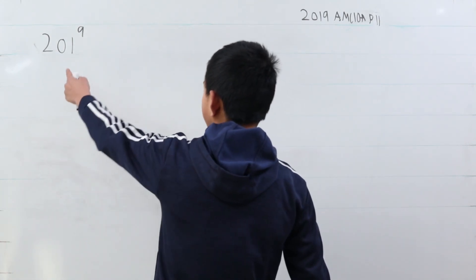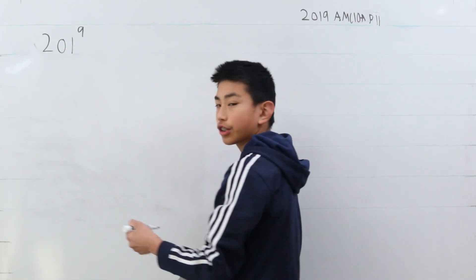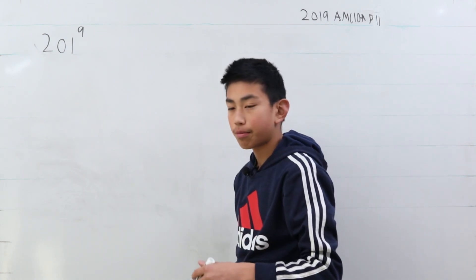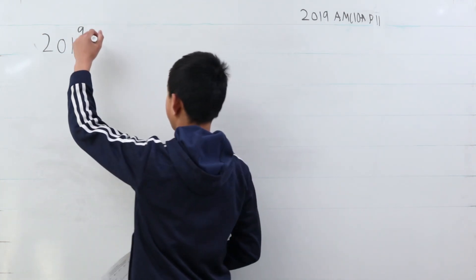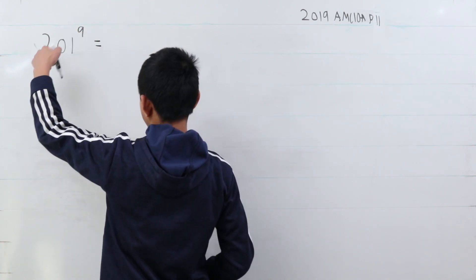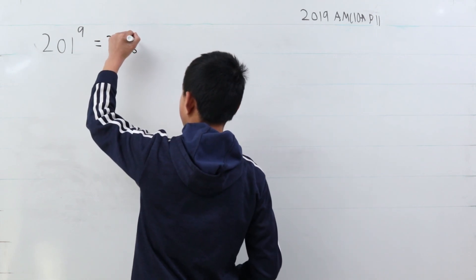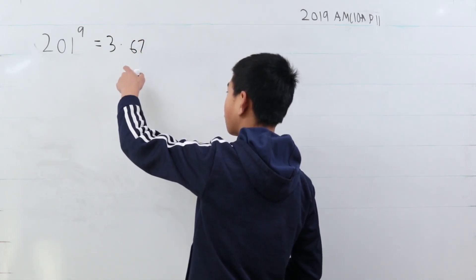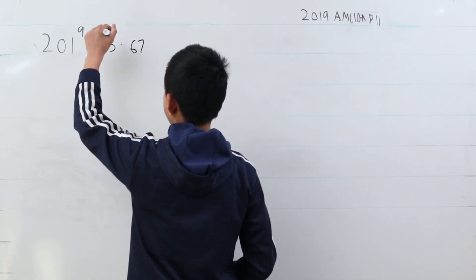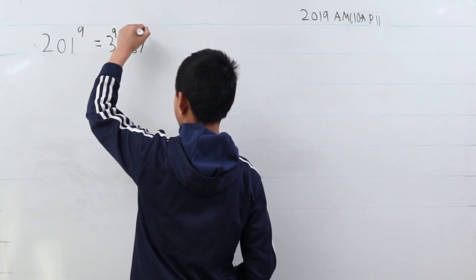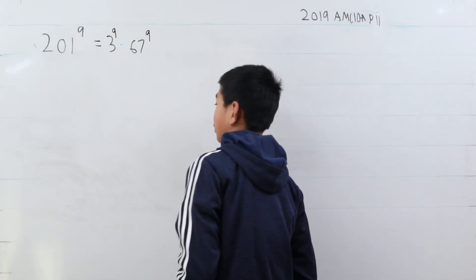Now, from 201, you can start by dividing by 2 and 3 and so on to figure out that 201 is 3 times 67. Since we're multiplying two terms together, we can keep the power to make it 3 to the power of 9 times 67 to the power of 9.